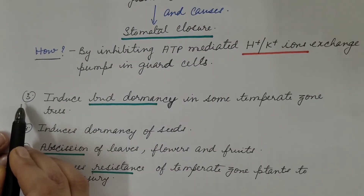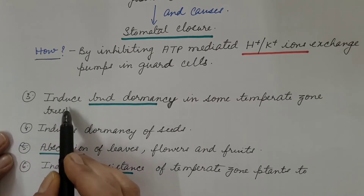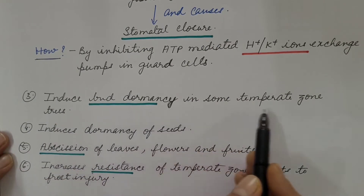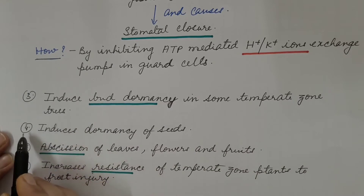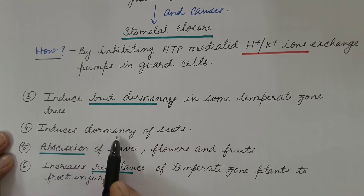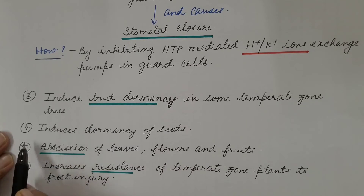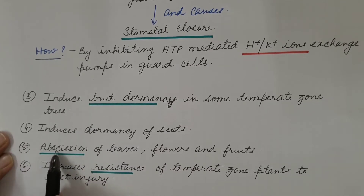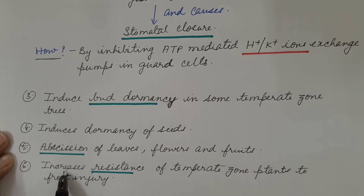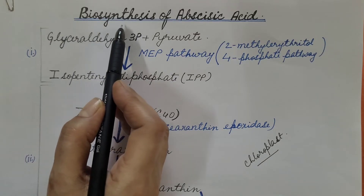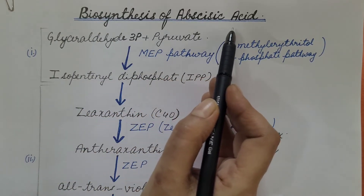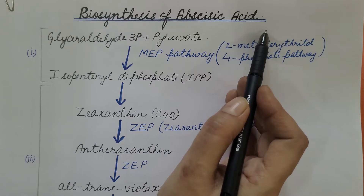Some other physiological effects: Third, it induces bud dormancy in some temperate zone trees. Fourth, it induces dormancy of seeds during unfavorable conditions. Fifth, it promotes abscission of leaves, flowers, and fruits. Sixth, it increases resistance of temperate zone plants to frost injury.